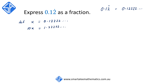And we're going to multiply x again, this time by 100, so that we get 100x is equal to 12.22222. What we want to achieve is we want to make sure that all the digits after the decimal point are exactly identical.